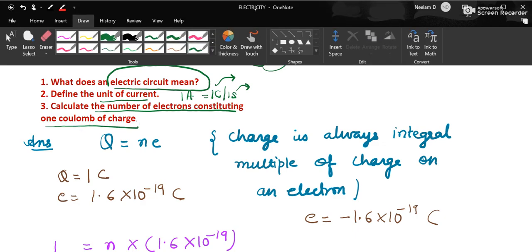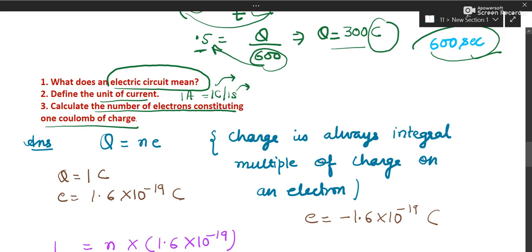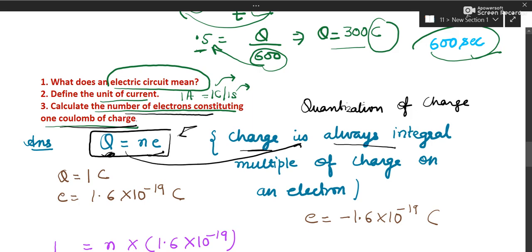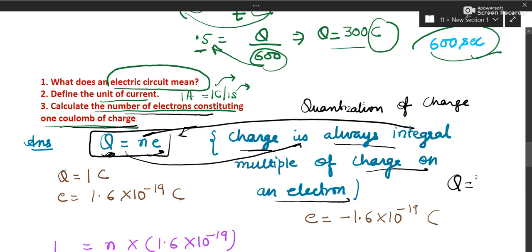Calculate the number of electrons constituting 1 coulomb of charge. There is a formula Q = ne, which is the formula for quantization of charge. Quantization of charge is a property of charge stating that charge is always an integral multiple of e, where e is the charge on an electron.